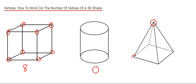Finally, our square-based pyramid. We have one at the top and four around the bottom—that's a total of five vertices. Thanks for watching, guys! See you next time.